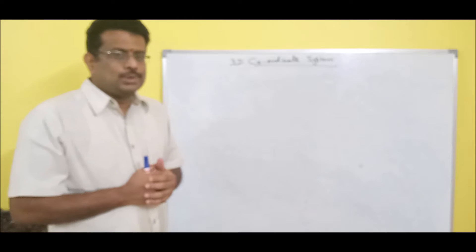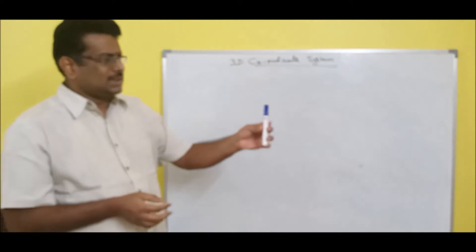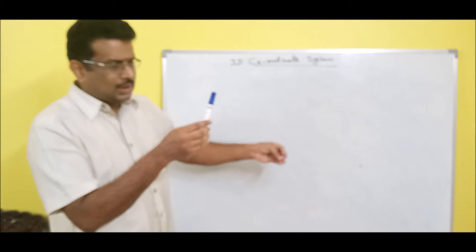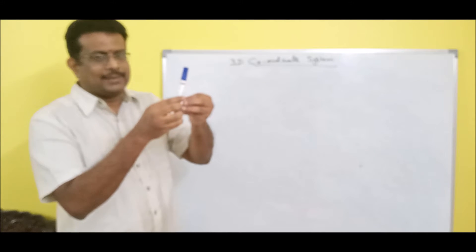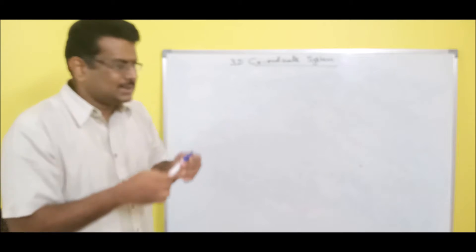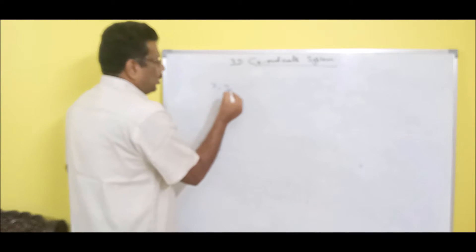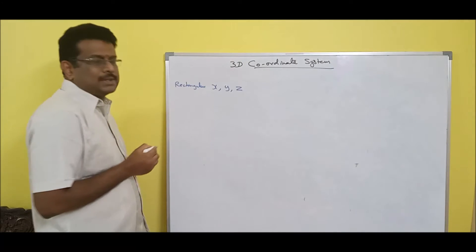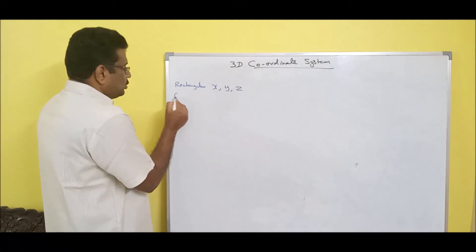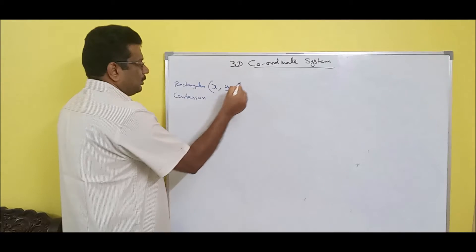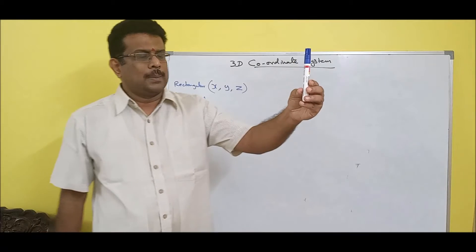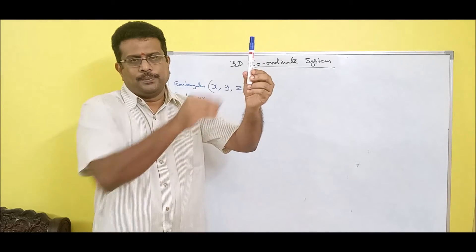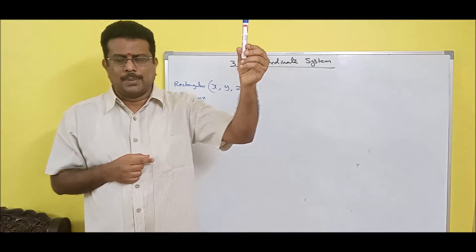Now let us go to three-dimensional. Consider a room — if you take a corner, you have x-axis, y-axis, z-axis. We use three coordinate systems called three-dimensional coordinates. We call it x, y, z — this is rectangular coordinates, which is the combination of x, y, z. You can also call it the Cartesian coordinate system. So if a marker pen is at some location, that location is x, y, z.